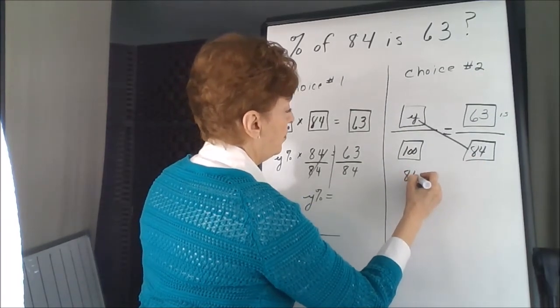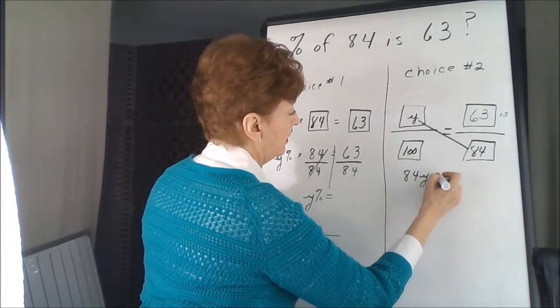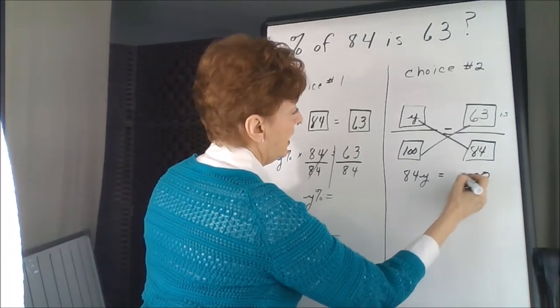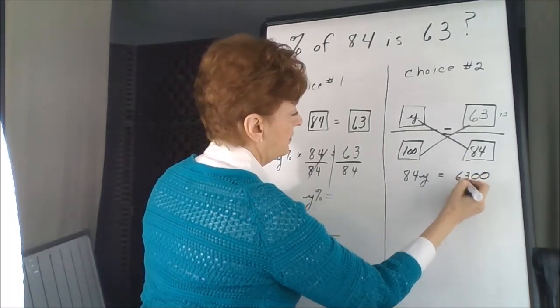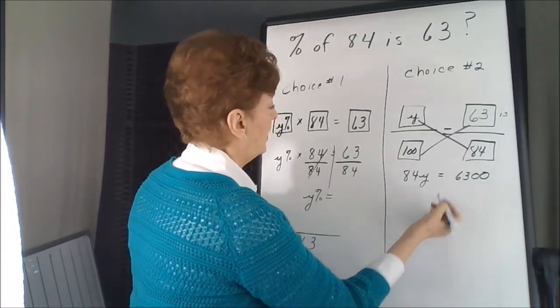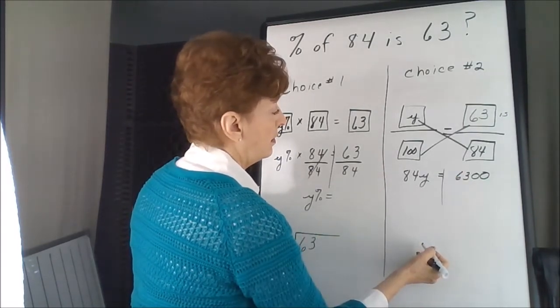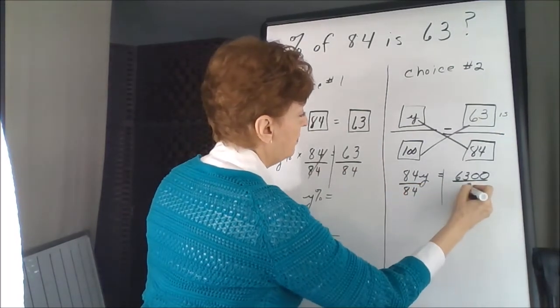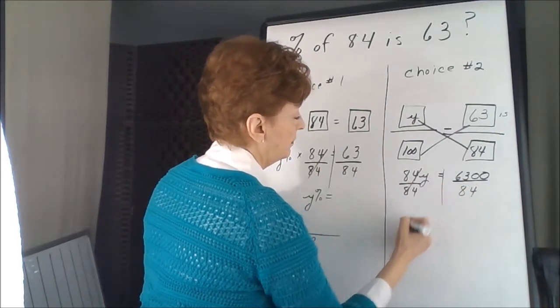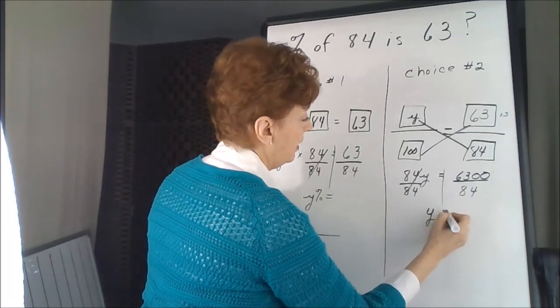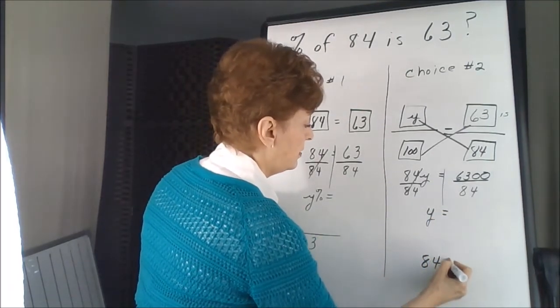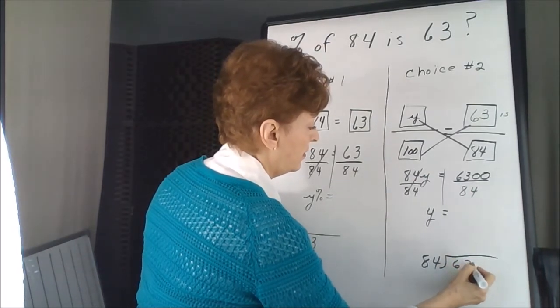84y equals two zeros and 63. Divide by 84, divide by 84. Y equals 84 divide into 6300.